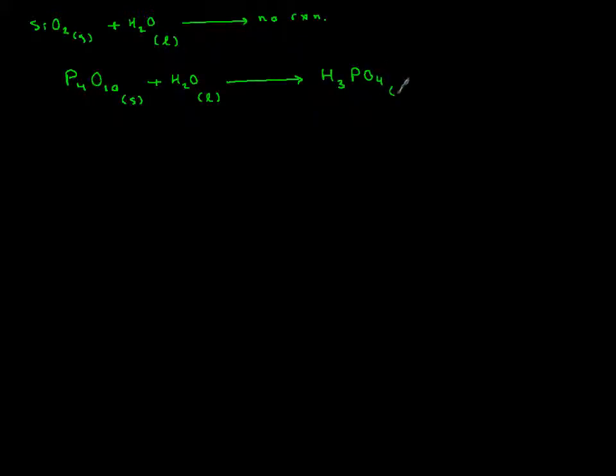H3PO4 aqueous. If you put 4 in front, then the phosphorus atoms are balanced: P4O10 + 6H2O. Phosphoric acid is produced—it is an acid, but it's a weak acid.